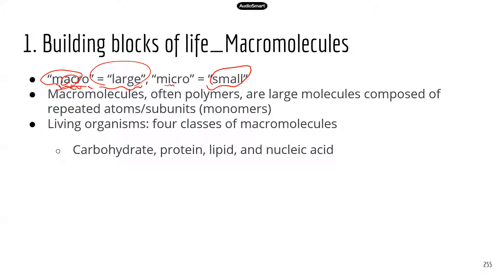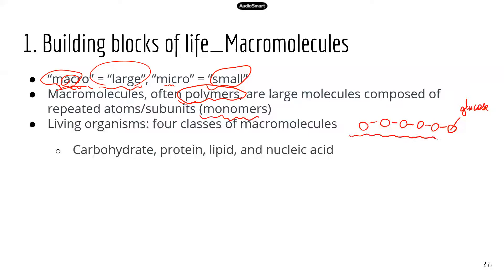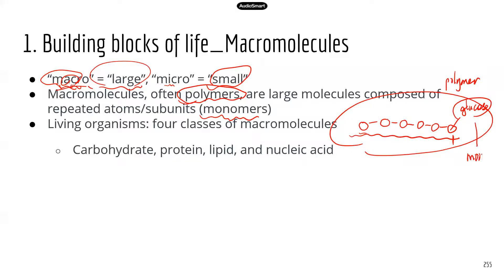Now these big molecules are usually polymers. Polymers are usually made up of repeated subunits, and those repeated subunits are known as monomers. For example, starch, which we'll talk about in a second, is a type of carbohydrate. Starch is a big molecule and a polymer. If you look at the starch structure more closely, you'll notice that starch is actually made up of repeated monomers, and these monomers are glucose. These repeated glucose molecules are linked together, and once linked to form a large molecule, that large molecule is known as a polymer, and the subunit — glucose — is the monomer.